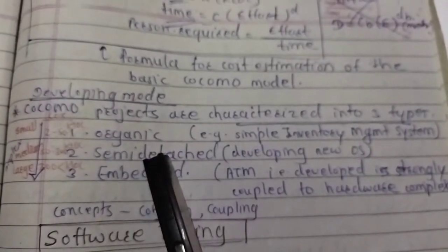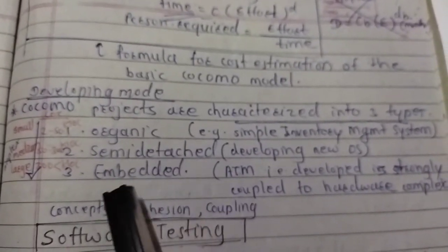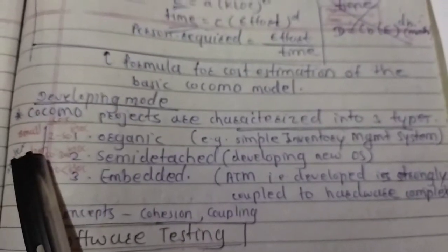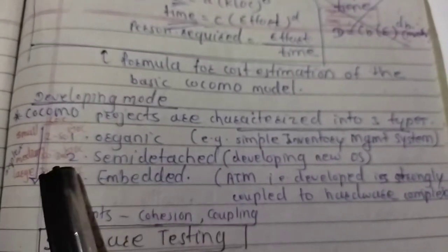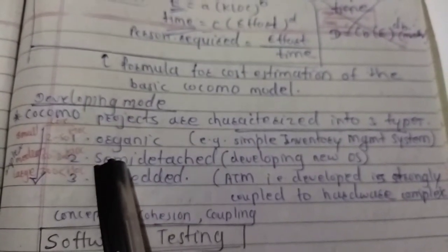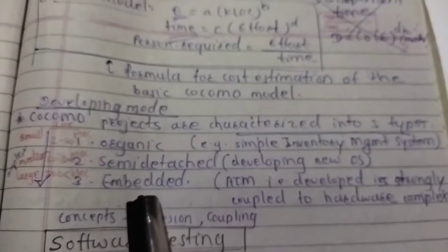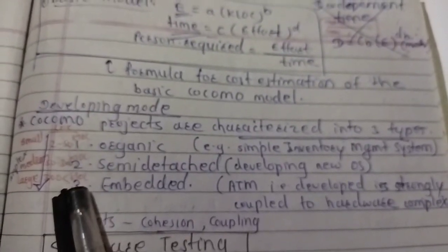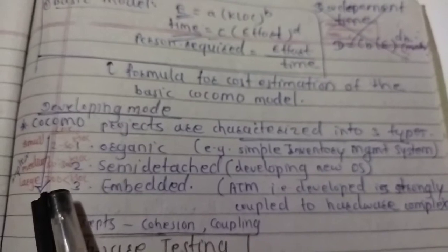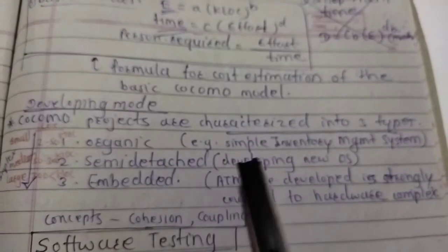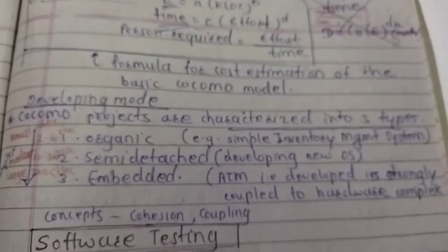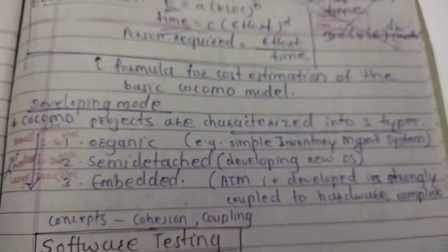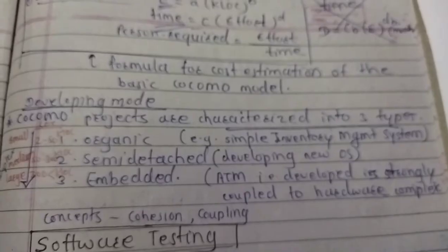COCOMO projects are characterized into three types: organic, semi-detached, and embedded. Organic means a small project consisting of 2 to 50 thousand lines of code. Semi-detached is medium, with 50 to 300 thousand lines of code. Embedded projects are large, greater than 300 thousand lines of code. For example, organic is like a simple academic project, semi-detached like developing a new operating system, and embedded like ATM software development.